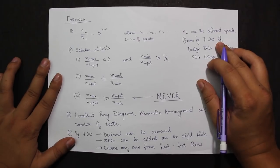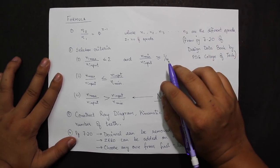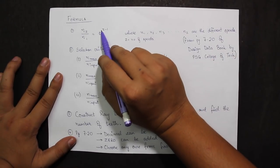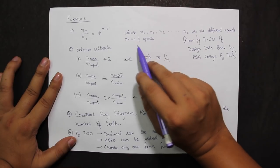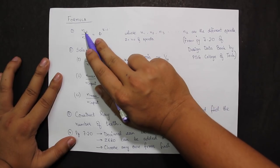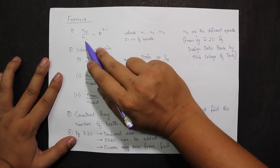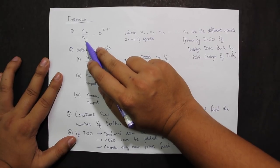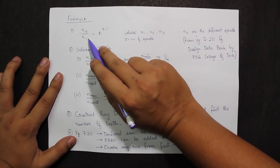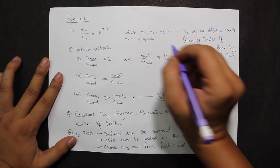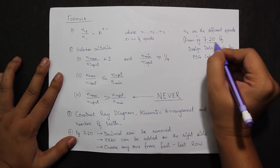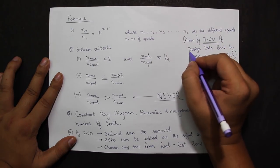Next we have formulas for the basic operations. NZ by NI equals φ to the power Z minus 1, where NZ is the final speed given in the question and NI is the initial or minimum speed. The speeds are available on page 7.20 in the design data book compiled by PSG College of Technology.